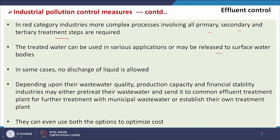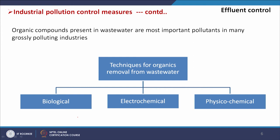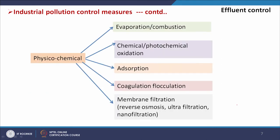Depending on wastewater quality, production capacity, and financial stability, industries may either pre-treat their wastewater and send it to a common effluent treatment plant, or establish their own. Types of pollutants in industrial effluent include organic compounds, which reduce dissolved oxygen in water, and heavy metals, pesticides, and special organic compounds. Techniques for organics removal include biological, electrochemical, and physicochemical methods such as evaporation, combustion, chemical or photochemical oxidation, adsorption, coagulation, flocculation, and membrane filtration.